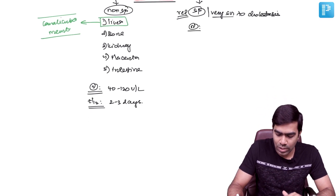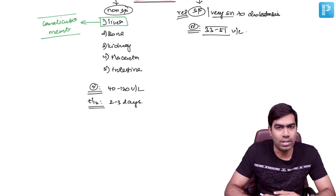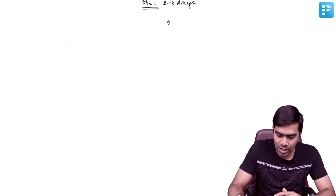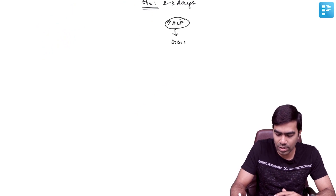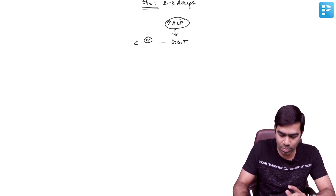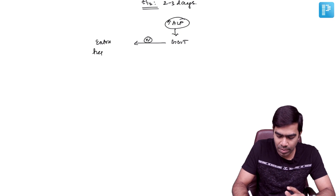The normal value of GGT is somewhere around 33 to 50 units per liter. Whenever you have an elevated alkaline phosphatase, the next step is to confirm it with GGT — you need to follow up with GGT values. If the GGT levels are normal, usually the ALP elevation is due to an extra-hepatobiliary source.